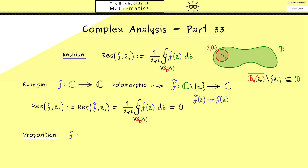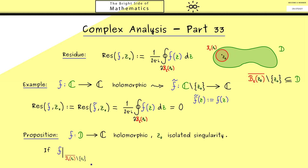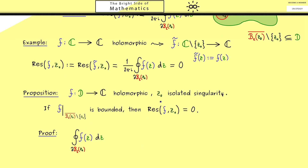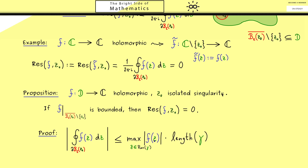Let's formulate this precisely. We need a holomorphic function f and an isolated singularity z0. We look at the function restricted to the punctured disk around z0. If this restriction is bounded, then the residue at z0 vanishes — this generalizes the example above. For the proof, we calculate the residue via the closed contour integral and look at its absolute value, applying the standard estimate: the maximum of |f| along the curve times the length of the curve gamma.